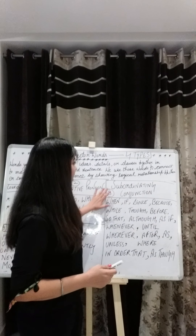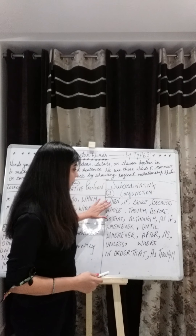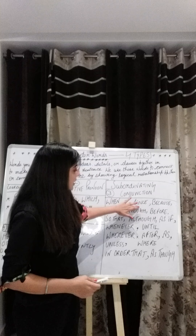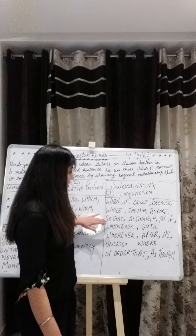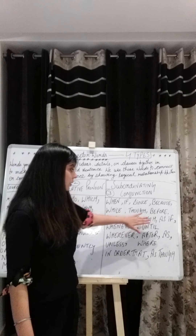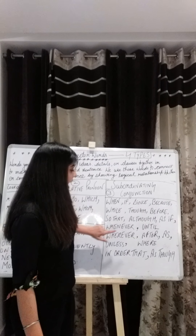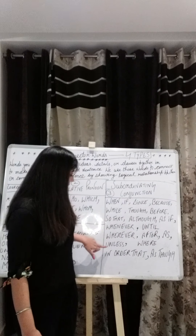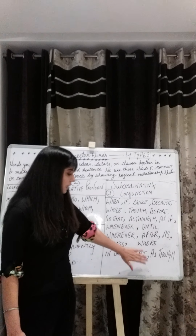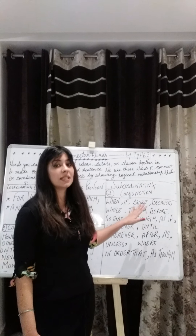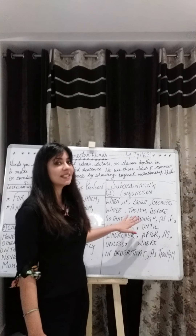The third type is Subordinating Conjunction. Under this we have: When, If, Since, Because, While, Though, Before, So That, Although, As If, Whenever, Until, Where, After, As, Unless, In Order That, and As Though. These are all the words that come under Subordinating Conjunction — quite a few connective words.